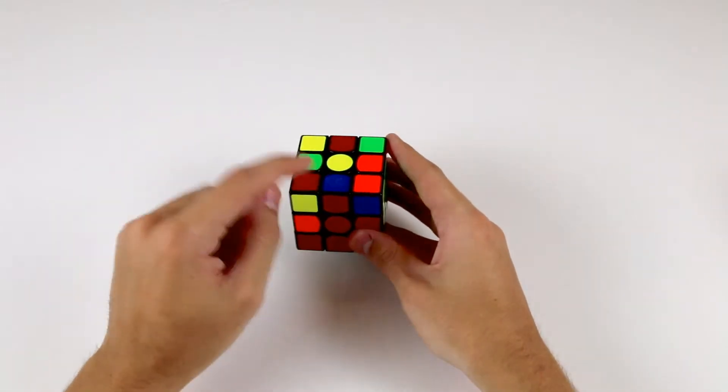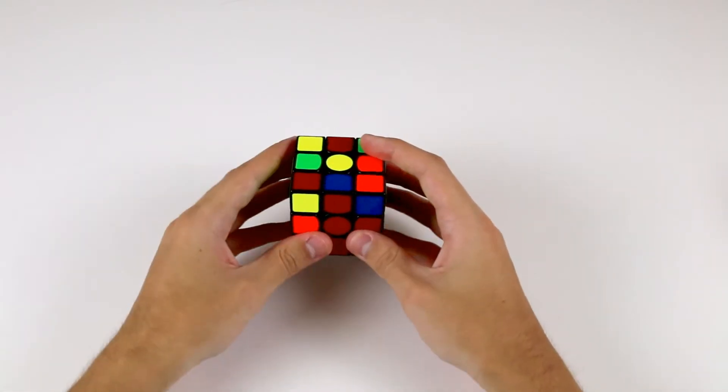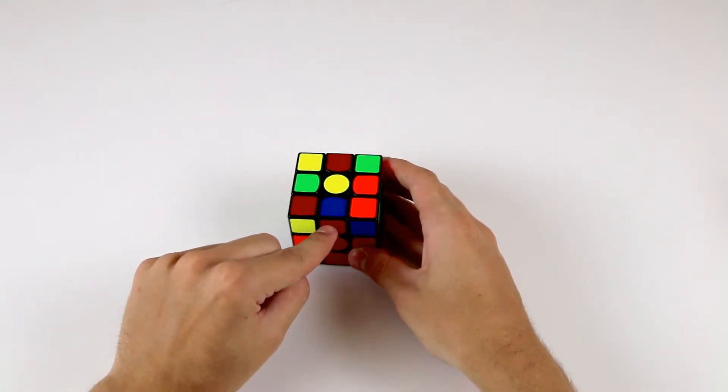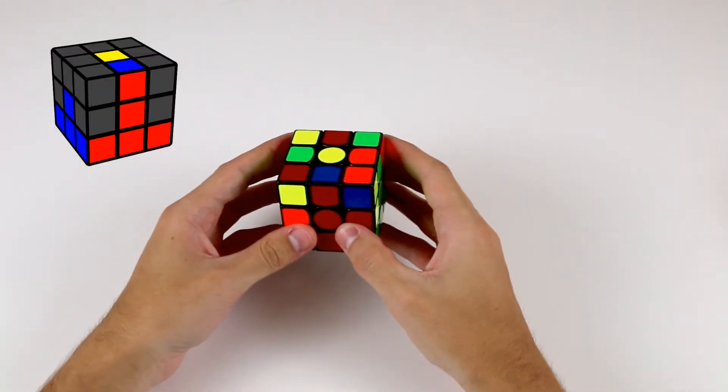In this case here, this blue and red edge needs to go to the left, in between the blue and red centers. So hold it so this edge is at the front and in the top, and make sure that the sticker on the side matches up with the center sticker. To move it to the left, you simply perform the following algorithm.